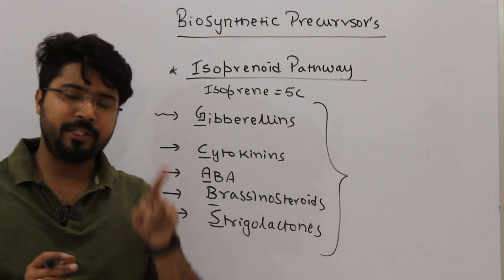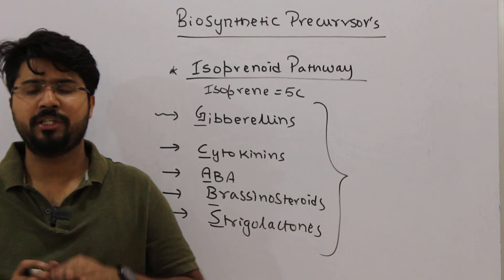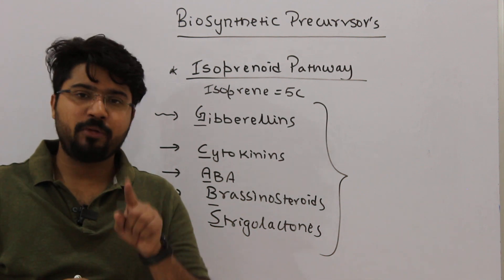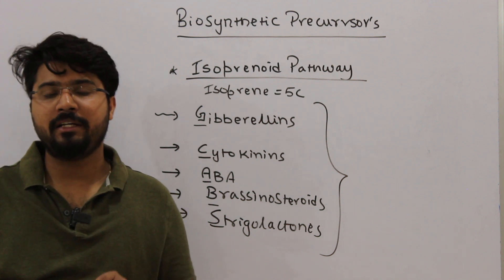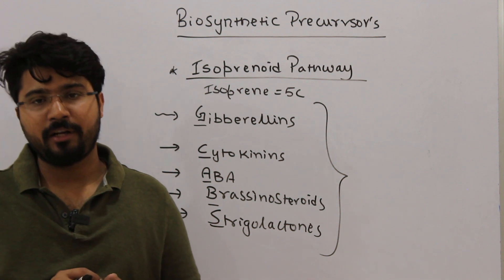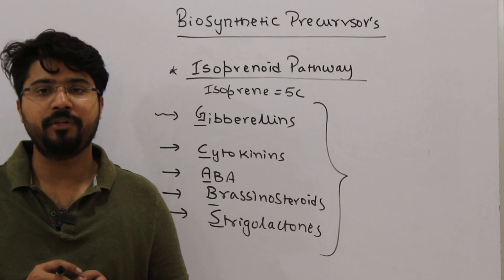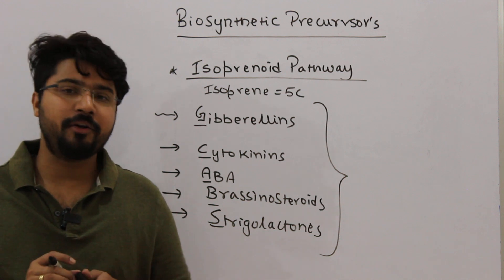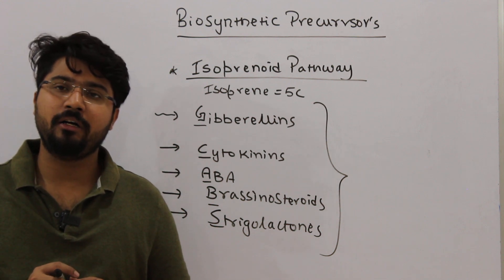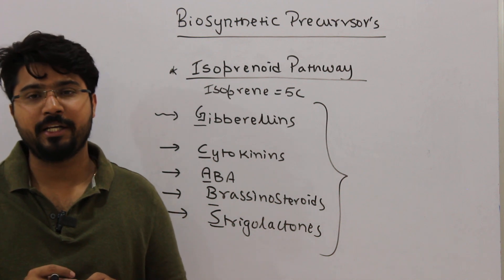So the isoprenoid pathway covers gibberellins, cytokinins, ABA, brassinosteroids, and strigolactones — almost everything is covered: auxins, cytokinins, ethylene, ABA, brassinosteroids, strigolactones, and jasmonic acid. The only one remaining is salicylic acid — the pathway for synthesis of salicylic acid is still not known, and most published literature will never mention its exact biosynthetic precursor. We will soon move on to understanding the first PGR to be discovered, which is auxin. Thank you.